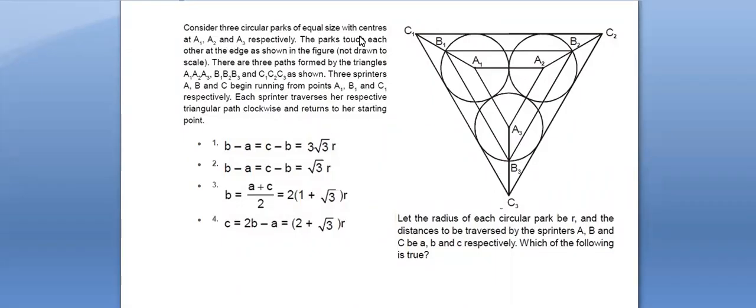In this question, there are three circular parks and A1, A2, A3 are the centers. There are three paths formed by straight lines: the outer triangle, the middle triangle, and the inner triangle.